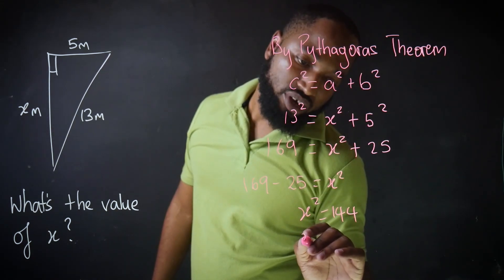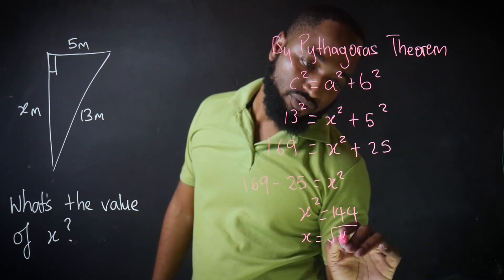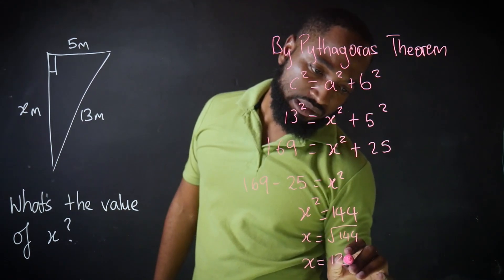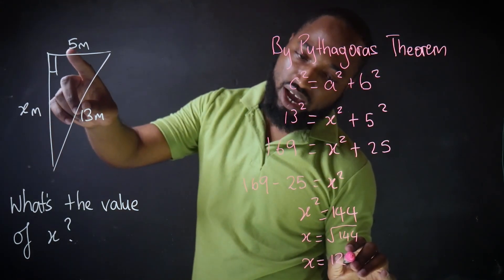If X squared is 144, X will be equal to the square root of 144. Do I have space to squeeze in this 12? And we are in meters.